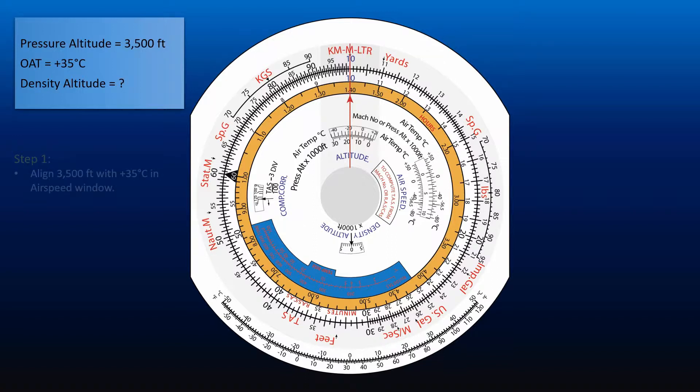To solve this problem, first align pressure altitude 3500 feet with outside air temperature plus 35 degrees Celsius in the airspeed window.